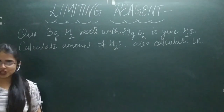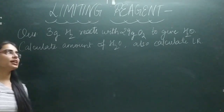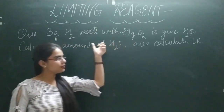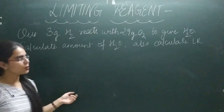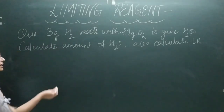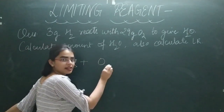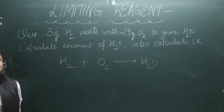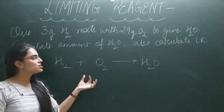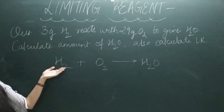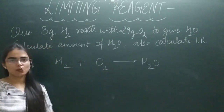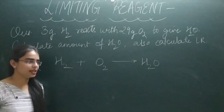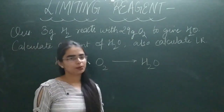Question: 3 grams of H2 reacts with 29 grams of O2 to give H2O. Calculate the limiting reagent and the mass of water formed. First, write the equation: H2 + O2 → H2O. Check if it is balanced. On the left we have 2 hydrogen and 2 oxygen; on the right we have 2 hydrogen and 1 oxygen — so it is not balanced yet. Balance it first.